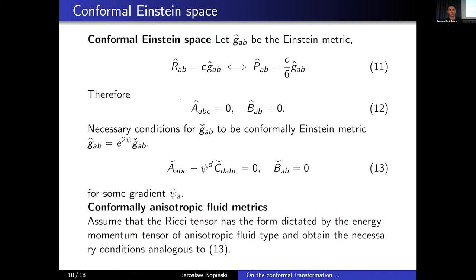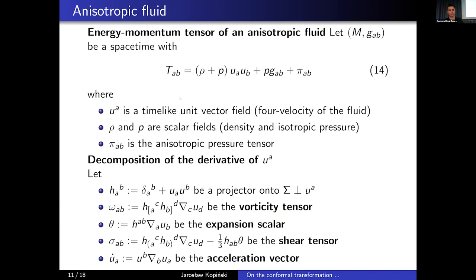Now if we assume that we have another metric G-check in the conformal class of G-hat, related by a conformal factor e^{psi}, then those conditions in equation twelve impose conditions on the Cotton and Bach tensors for the metric G-hat visible in equation thirteen. These conditions will be important in a moment, as they appear again in a more generalized form when some metric is conformal to an anisotropic fluid metric.